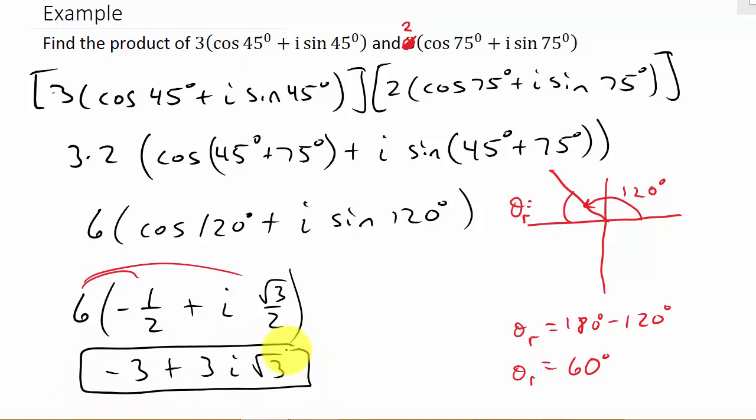Alright, so that's all you do. You just multiply r₁ times r₂, add the angles together, and then you convert it to rectangular form. A lot of the directions say that, and if your teacher tells you just leave it in trigonometric form, that's fine too. Alright, so I hope this helped. Give me a like, subscribe, share the video. Thanks for watching.